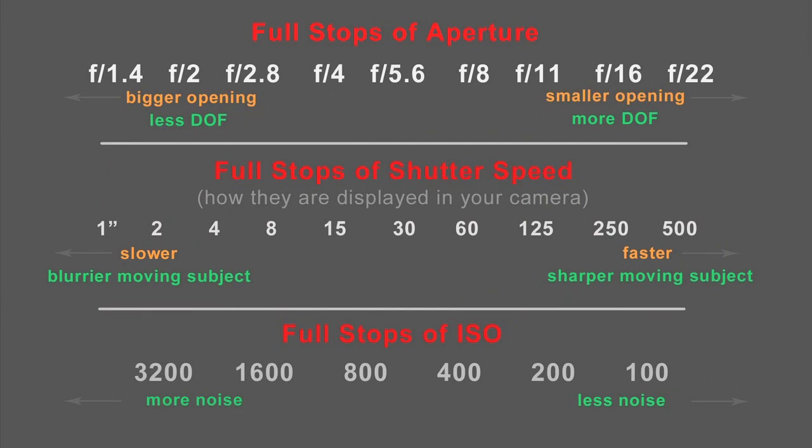You should also keep in mind that the amount of light is not the only thing influenced by aperture, shutter speed, and ISO — there are other effects as well. The aperture also influences depth of field, or how much of the image will appear in focus. The smaller the aperture opening, the more depth of field you will get and the more of the image will appear in focus.